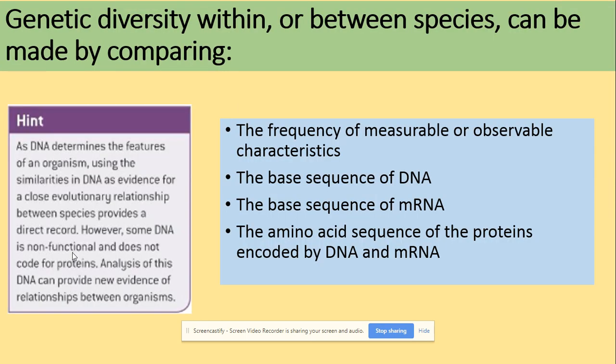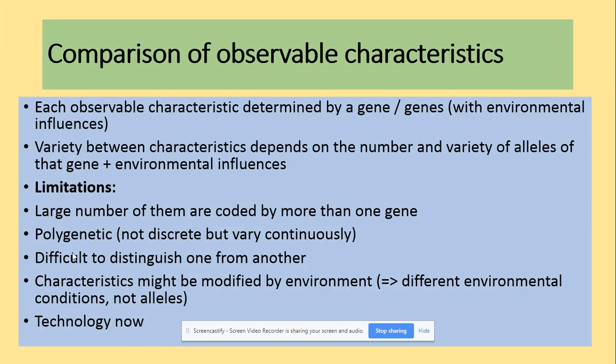Genetic diversity within or between species can be assessed by comparing the frequency of measurable or observable characteristics, the base sequence of DNA, the base sequence of mRNA, and the sequence of amino acids. A limitation of looking only at observable characteristics is that you can see them, but you don't know what genetics underlies them.